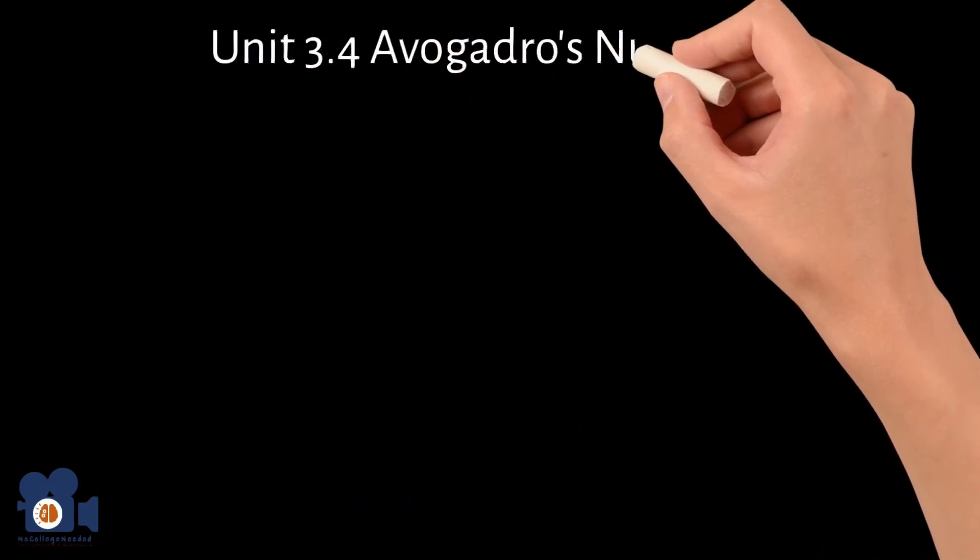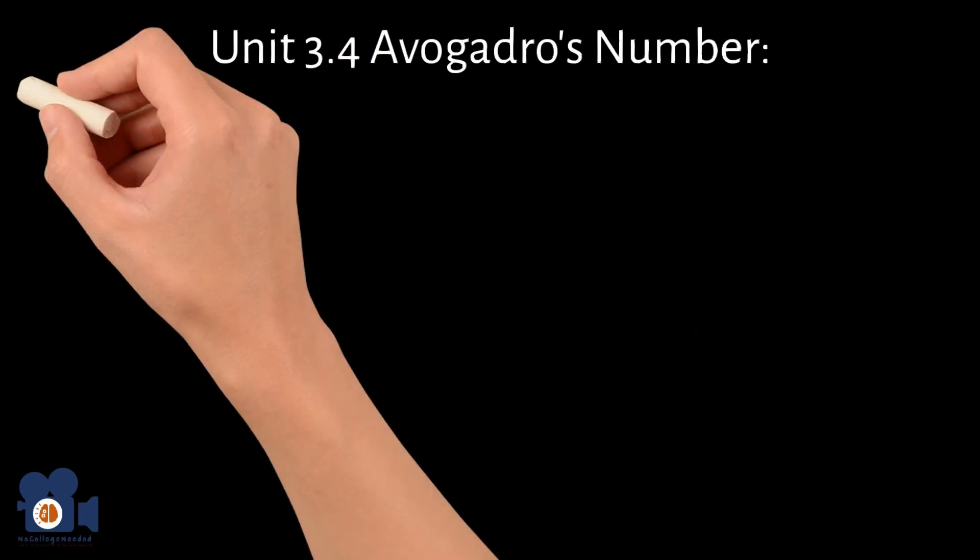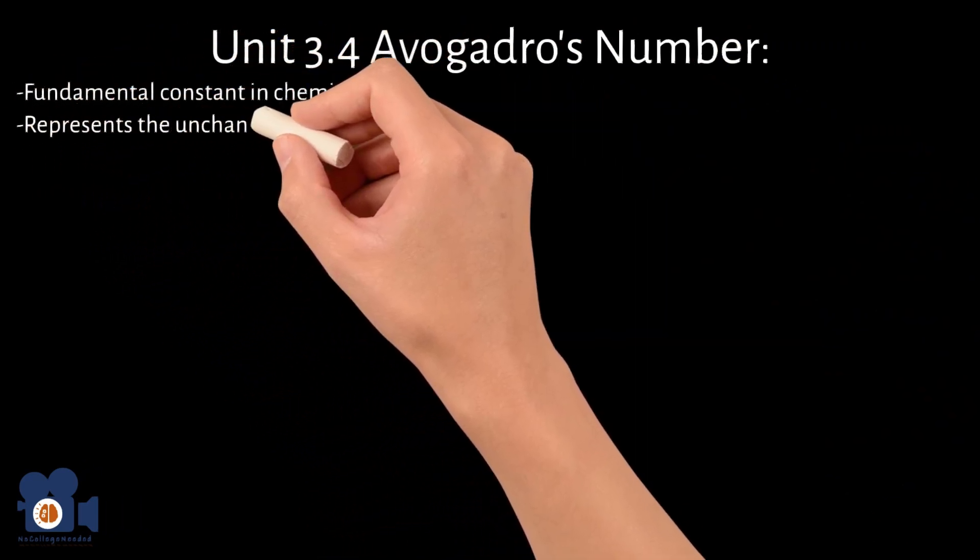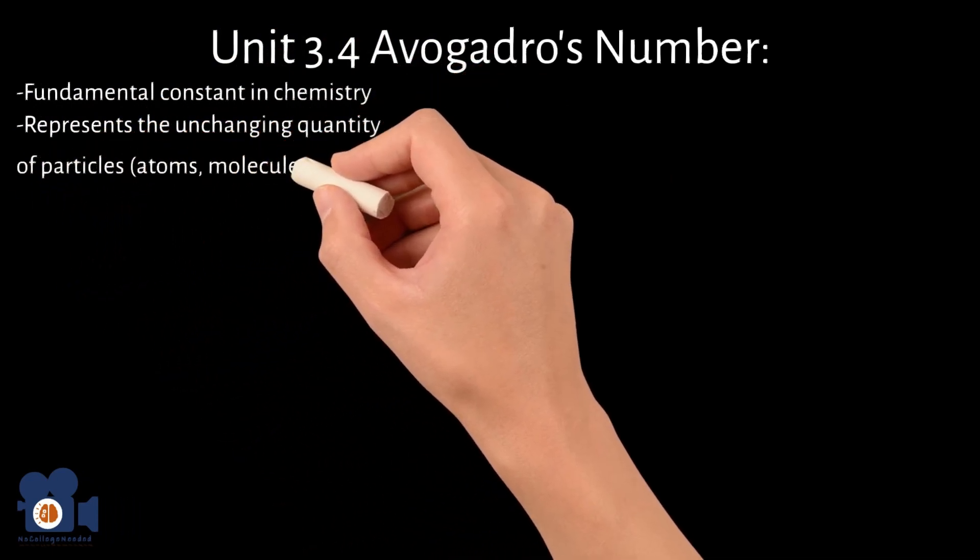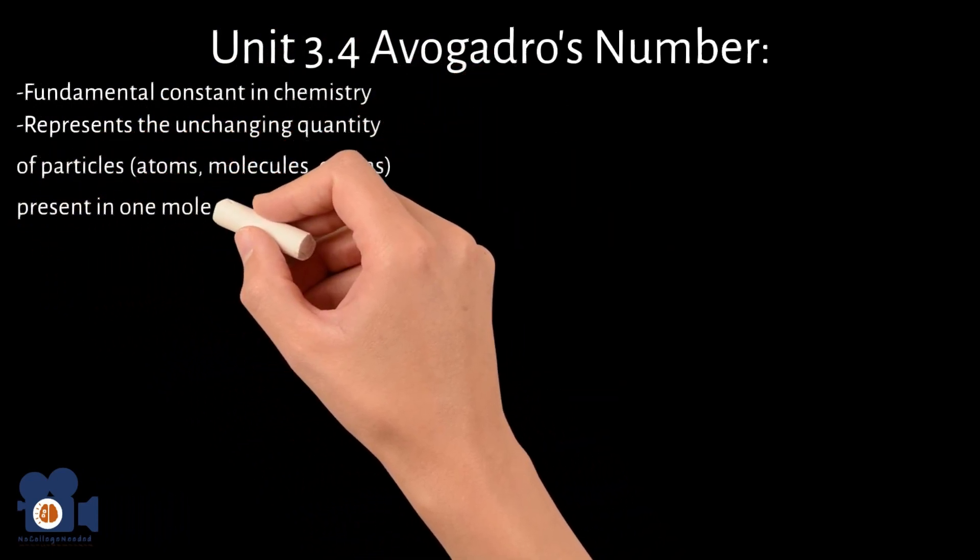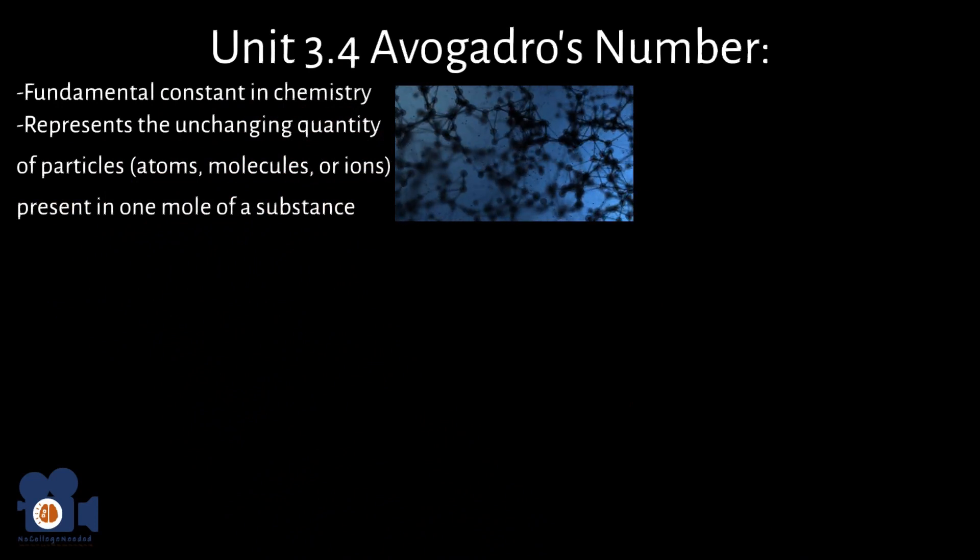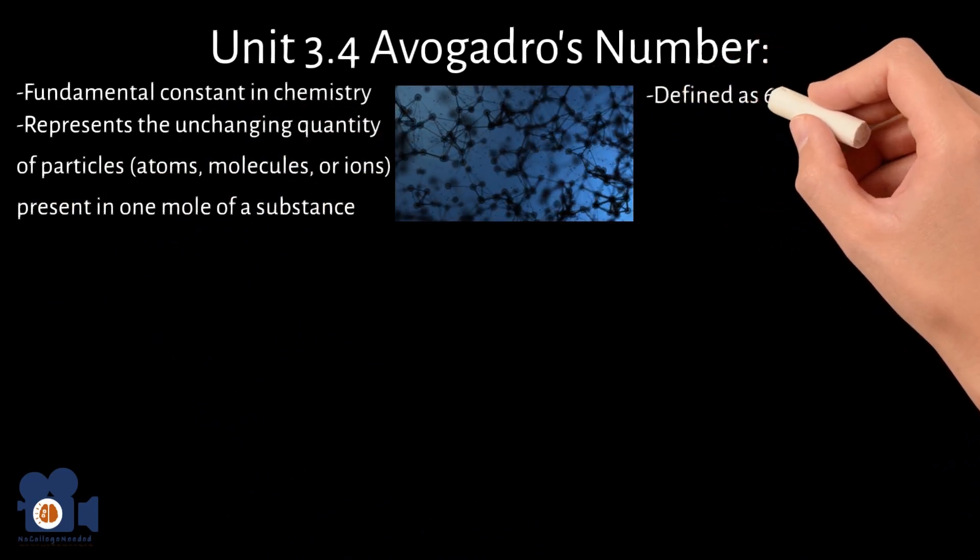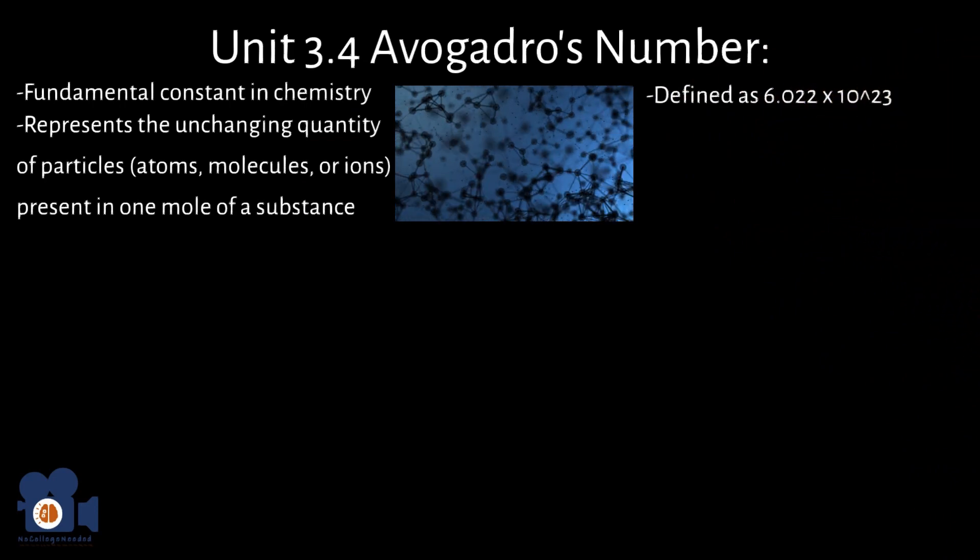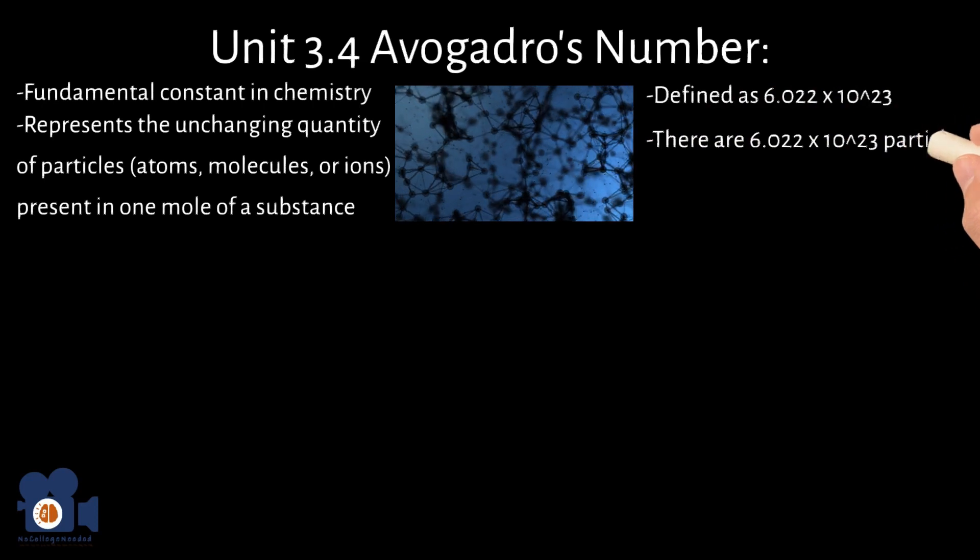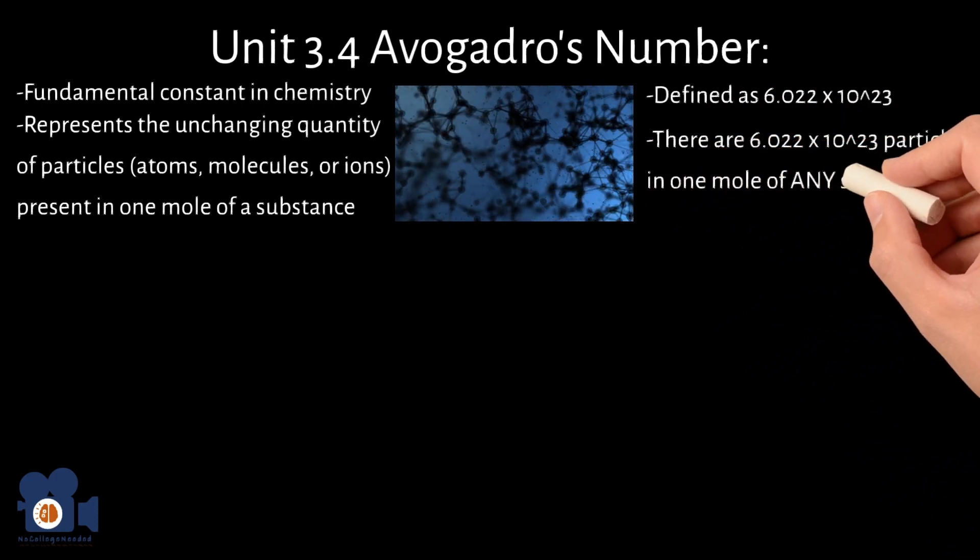Unit 3.4: Avogadro's number. Avogadro's number is a fundamental constant in chemistry that represents the unchanging quantity of particles, atoms, molecules, or ions present in one mole of a substance. Avogadro's number is defined as 6.022 times 10 to the 23rd, which means that there are 6.022 times 10 to the 23rd particles in one mole of any substance.